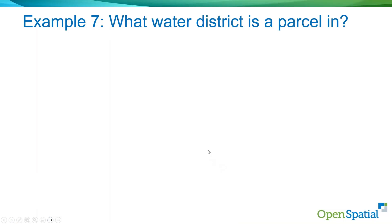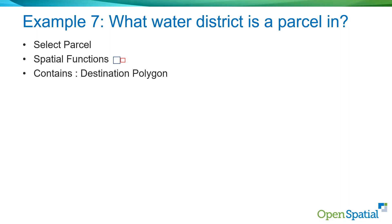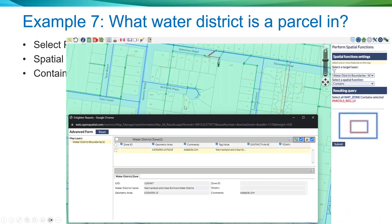Here's a polygon example: given a specific point or parcel, what zone or district is it within? You select the subject parcel, apply the spatial function 'contains,' and ask which water boundary contains that subject. The system returns the one water zone boundary that contains the parcel, giving you the relevant zone information. It's the larger outline within which the parcel sits.